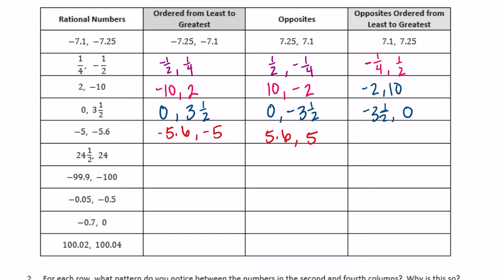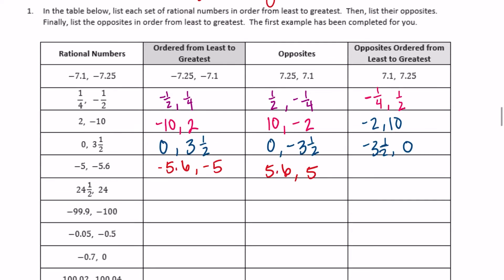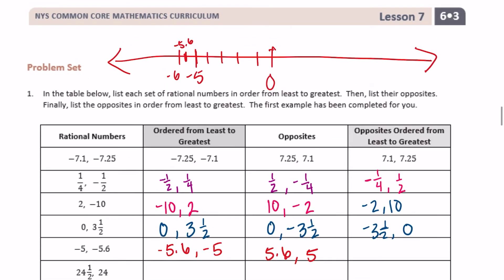When we order those opposites — five-and-six-tenths and five — they're going to be over here on the number line. Five would be right there, and if we had six here, five-and-six-tenths would be about right there.